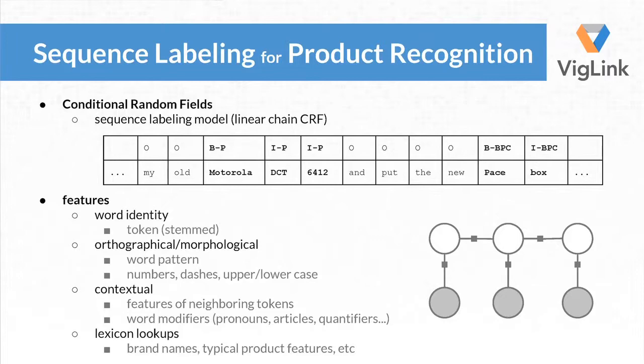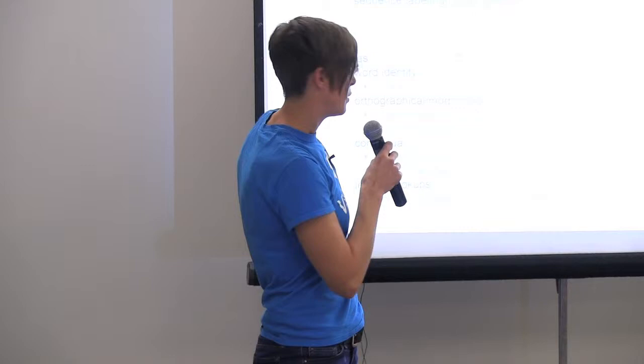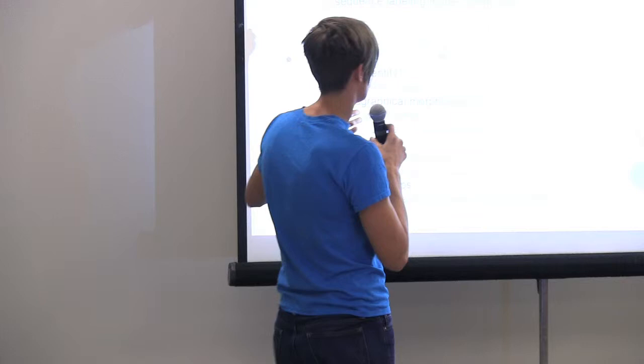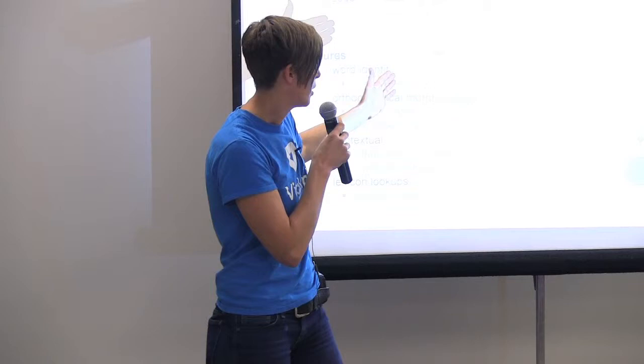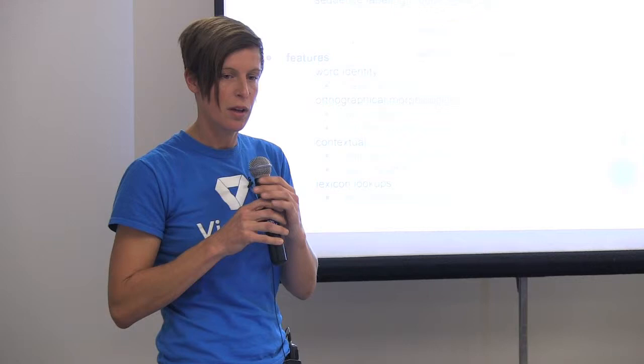Conditional random fields is a sequence labeling model used a lot for this task — it's structured prediction. Instead of predicting for every word independently whether it should be a product or not, we create a sequence of words and use the surrounding words as information about the current decision. There's a tagging scheme called IOB: for every word, we mark whether it's the Beginning of a product, Inside a product, nothing at all, a product category, and so on. There's a lot of feature engineering to find out what your model should be informed about — the word itself, tokens, maybe a stem form, orthographic and morphological information such as suffixes, prefixes, word patterns, whether there are dashes or numbers inside, and whether it's capitalized. All this helps the model learn.